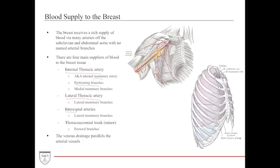The intercostal arteries provide blood via the lateral mammary branches, coming off the aorta to supply the posterior lateral region of the breast. The thoracoacromial trunk is a minor contributor providing blood via the pectoral branches to the pectoralis major and minor. In terms of venous drainage, the venous drainage pretty much parallels a lot of these arterial vessels.